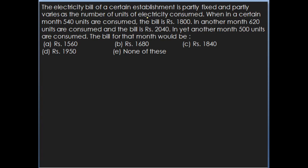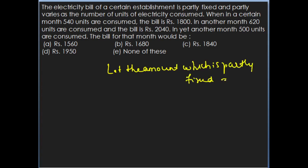The electricity bill is partly fixed — some amount is not dependent on units consumed. Let the fixed amount be Rs. X. Along with X, you pay for the units consumed. In a certain month, 540 units are consumed, so for one unit you pay Y rupees, and for 540 units you pay 540 into Y rupees.